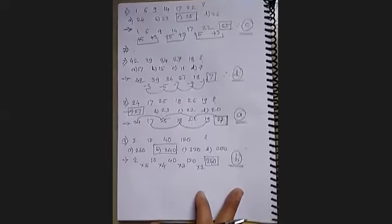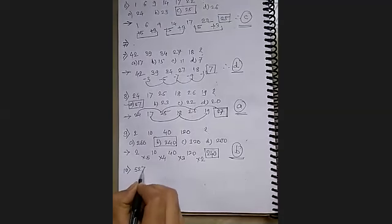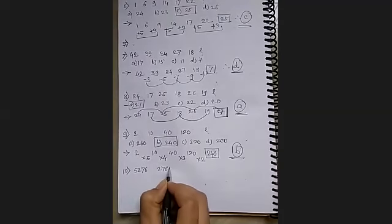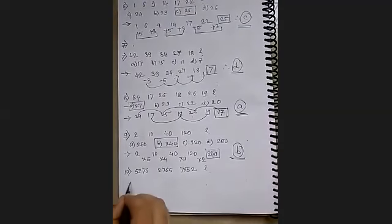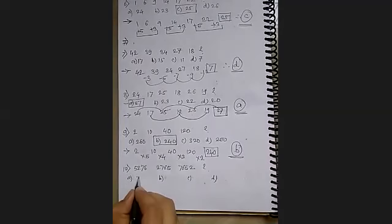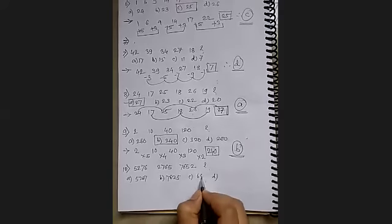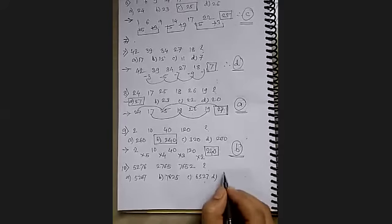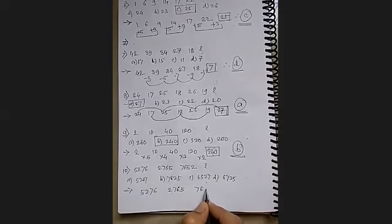Next one, number 10. Very simple. 5, 2, 6, 7, 6, 2, 7, 6, 5, 2. What is the answer? And your options are 5, 2, 6, 7; 7, 6, 2, 5.